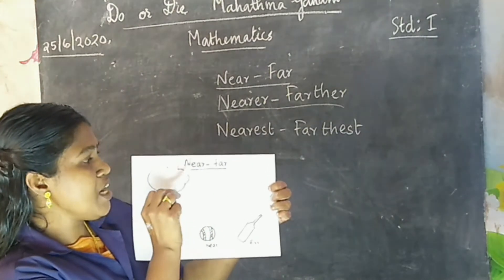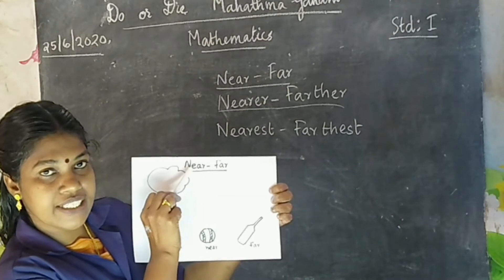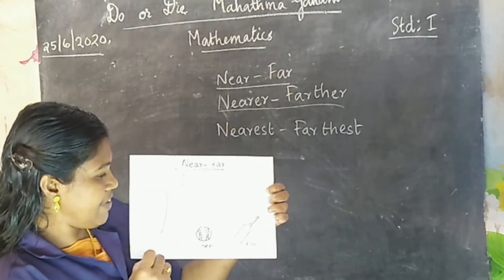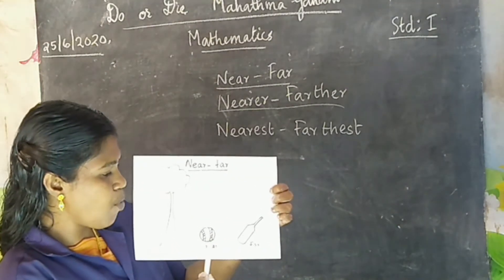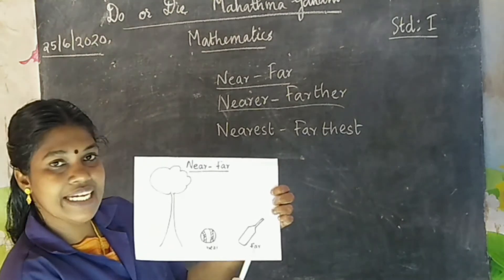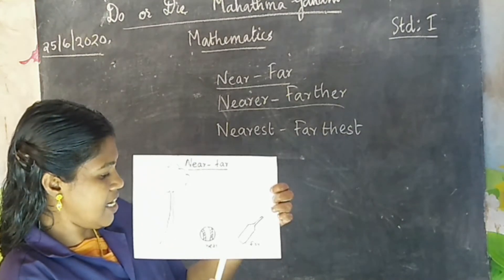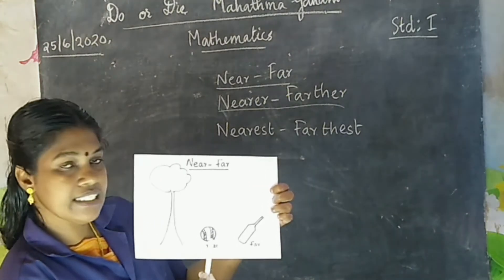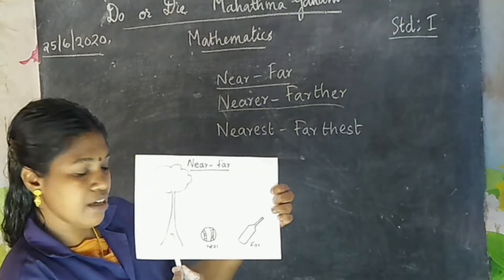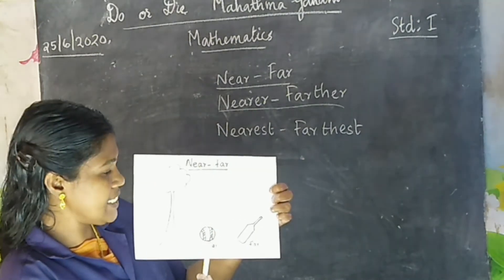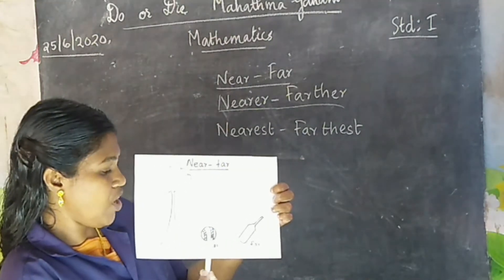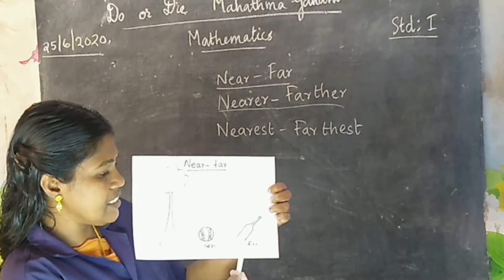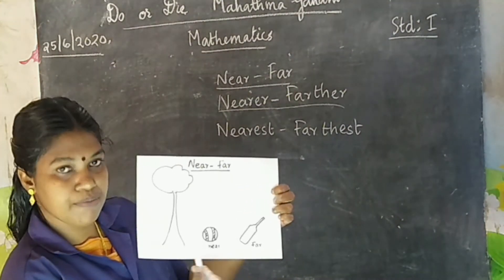Once more. Near means adutth, far means dhuri. Here we have a tree, a ball, and a bat. Ball is near this tree and bat is far from this tree.